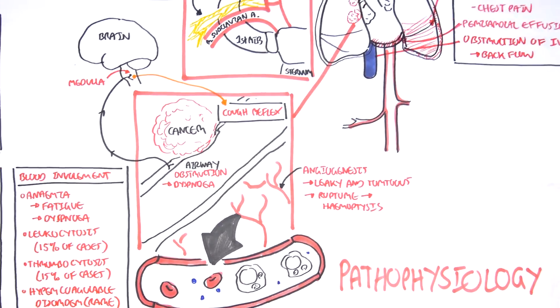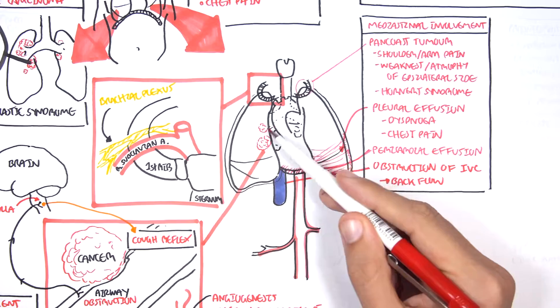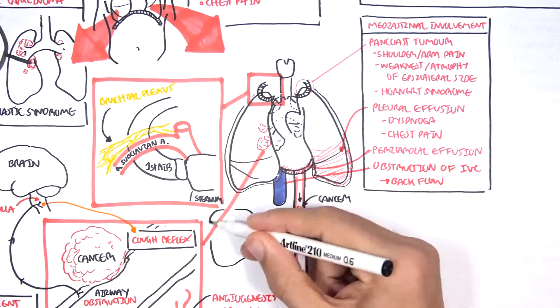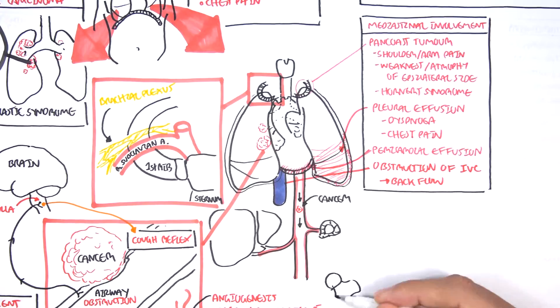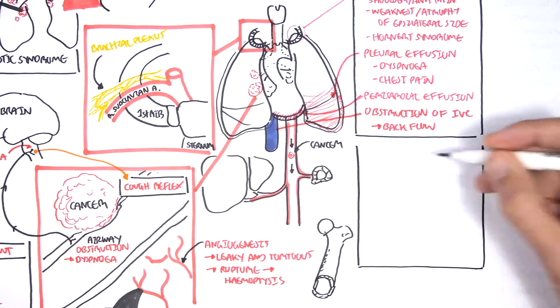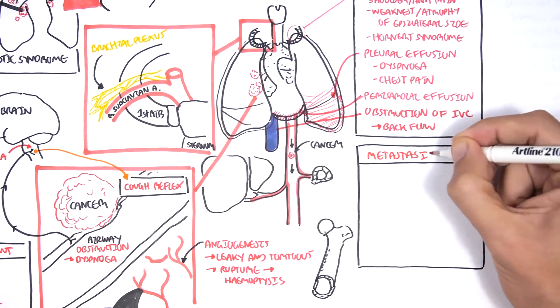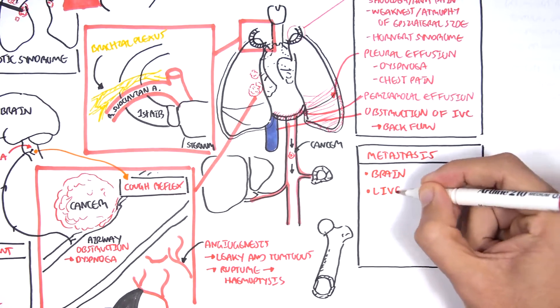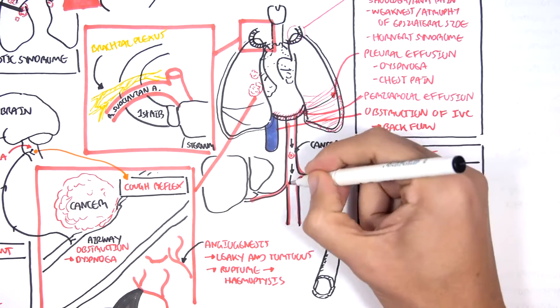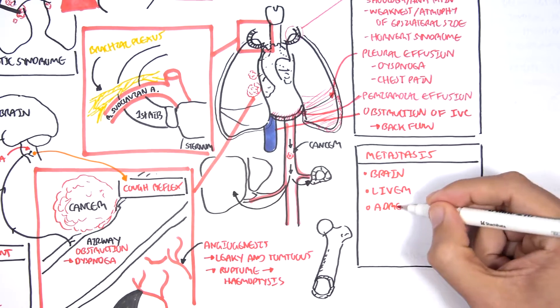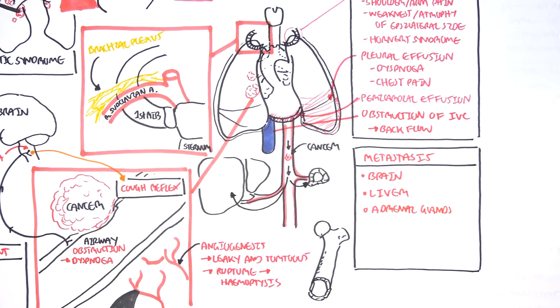Lung tumors can metastasize, and they do. When it metastasizes, it goes to the heart, and then the heart will pump the tumor, the growth, the cancer, either up to the brain and upper limbs or down to the abdomen area. Common sites of lung metastases include the brain, the liver, the adrenal glands, and the bone.